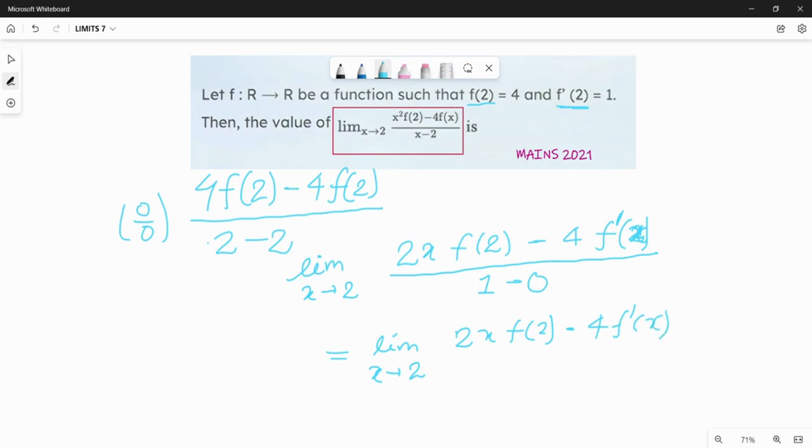Now we put the limit everywhere. So 2 into, in place of x we put 2, f of 2 is 4, minus 4 f dash x, so this becomes f dash 2 which is 1. This becomes 2 into 2 which is 4, 4 into 4 is 16, minus 4. So the final answer is 12.